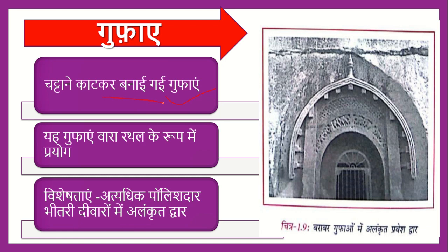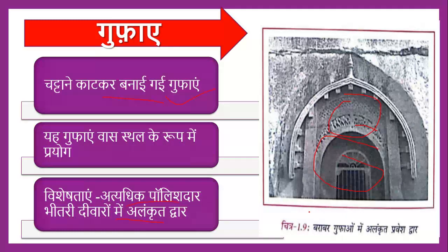Maurya Kaal caves were known for their polished surface. You can write 2 examples for this. Another one is Nagarjuni. The second one is Ashok's son Dashratha — Rajikhal. So if you can bring these two to three-four points, you will have your top points for the exam.